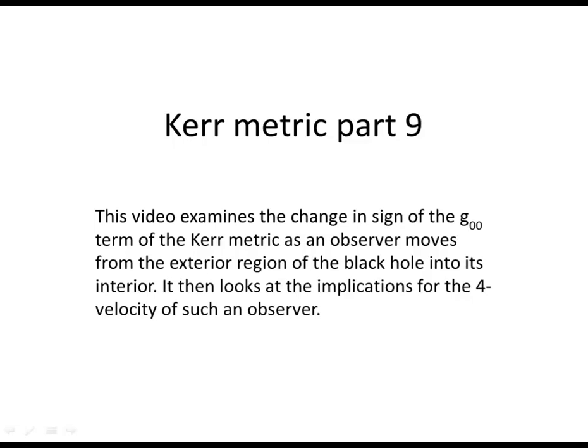This video examines the change in sign of the G00, or time component term, of the Kerr metric as an observer moves from the exterior region of the black hole into its interior. It then looks at the implications for the four-velocity of such an observer.